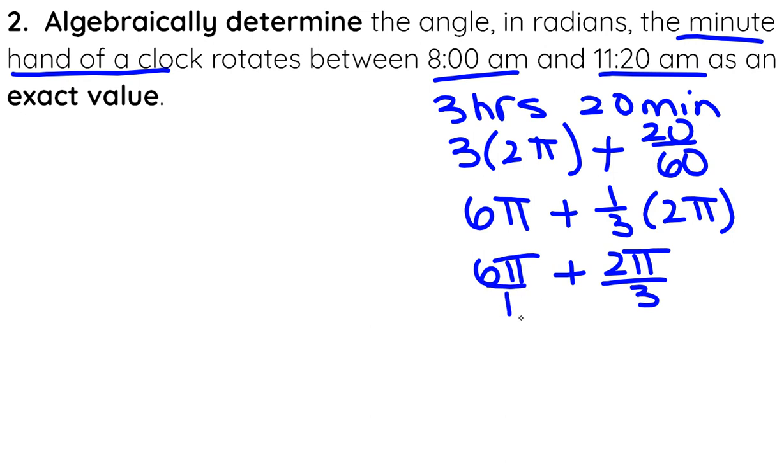Let's do this with a common denominator. 6π/1 is the same as 18π/3 plus 2π/3.